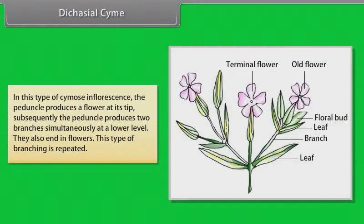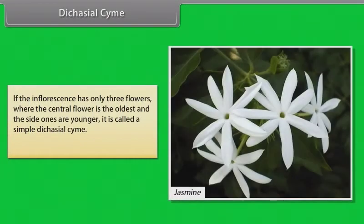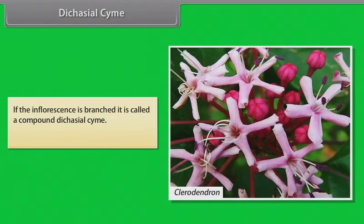In dichasial cyme, the peduncle produces a flower at its tip; subsequently the peduncle produces two branches simultaneously at a lower level, which also end in flowers, and this branching is repeated. If the inflorescence has only three flowers where the central flower is the oldest and the side ones are younger, it is called a simple dichasial cyme — example: Jasmine. If the inflorescence is branched, it is called a compound dichasial cyme — examples: Clerodendron, Reishia.